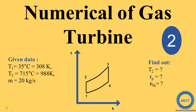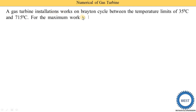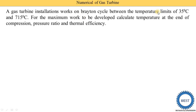In this video, we solve a numerical of a gas turbine. First, we understand the problem statement. A gas turbine installation works on a Brayton cycle, between temperature limits of 35 degrees centigrade and 715 degrees centigrade. The lower temperature is T1 = 35°C and the higher temperature is T3 = 715°C.